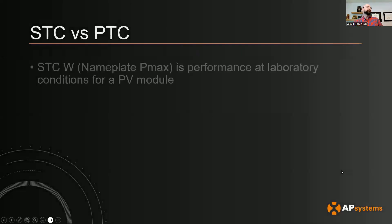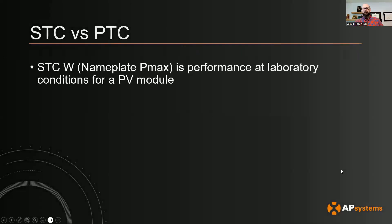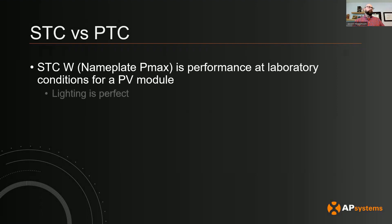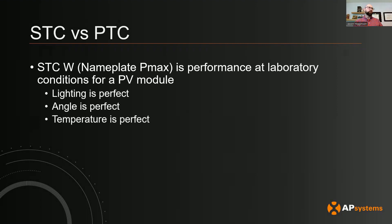Let's talk about the difference between the two. STC is really the nameplate — the listing that is on the PV module spec sheet. That's laboratory performance conditions: the lighting is perfect, the angle is perfect, the temperature — everything is ideal. And so the performance comes out to, let's say, 400 watts for this PV module.